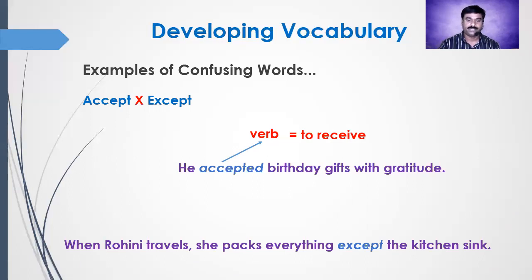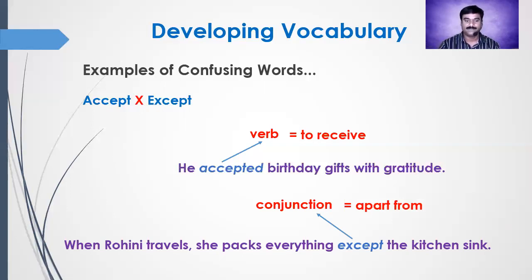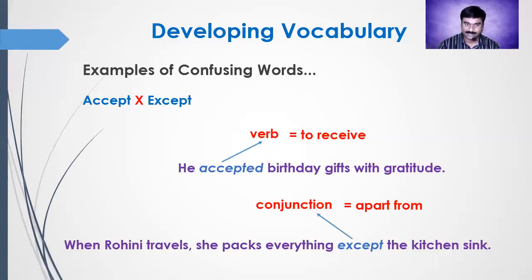Let us take another example: 'When Rohini travels, she packs everything except the kitchen sink.' Here, 'except' is a conjunction and it means 'apart from'. It's a funny sentence — when Rohini travels, she packs everything except the kitchen sink, meaning it is only the kitchen sink she leaves apart; otherwise she takes everything with her. By this time, you might have understood the difference between 'accept' and 'except'.